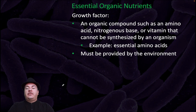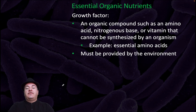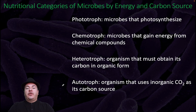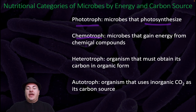A growth factor is an organic compound, such as an amino acid, nitrogen-containing base, or vitamin, that cannot be synthesized by an organism — for example, the essential amino acids. Since the organism can't synthesize it but it's required for life, it must be provided by the environment. We can also break down organisms based on how they get their energy and carbon: phototrophs use photosynthesis to get their energy, whereas chemotrophs gain energy from chemical compounds. Heterotrophs obtain carbon in organic form, whereas autotrophs use inorganic carbon dioxide as their carbon source.